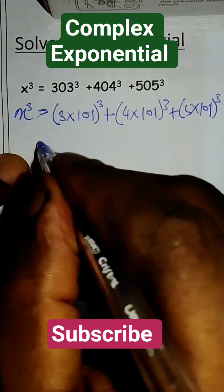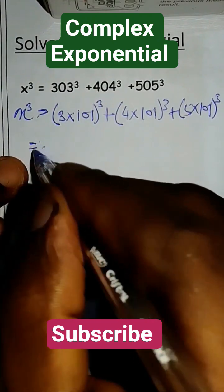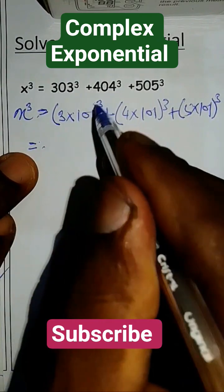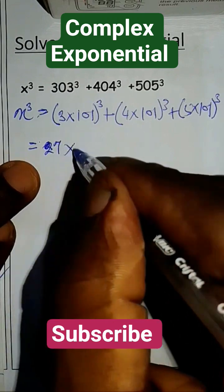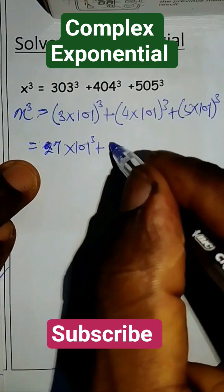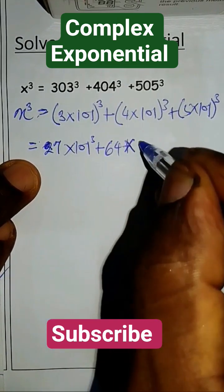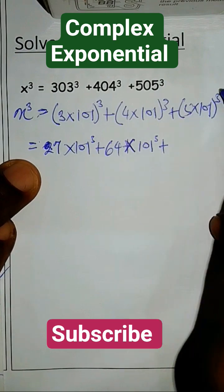So the next thing is, this is equal to 3 raised to the power 3, which is 27 times 101 raised to the power 3, plus 4 raised to the power 3, which is 64 times 101 raised to the power 3, plus 5 raised to the power 3, which is 125 times 101 raised to the power 3.